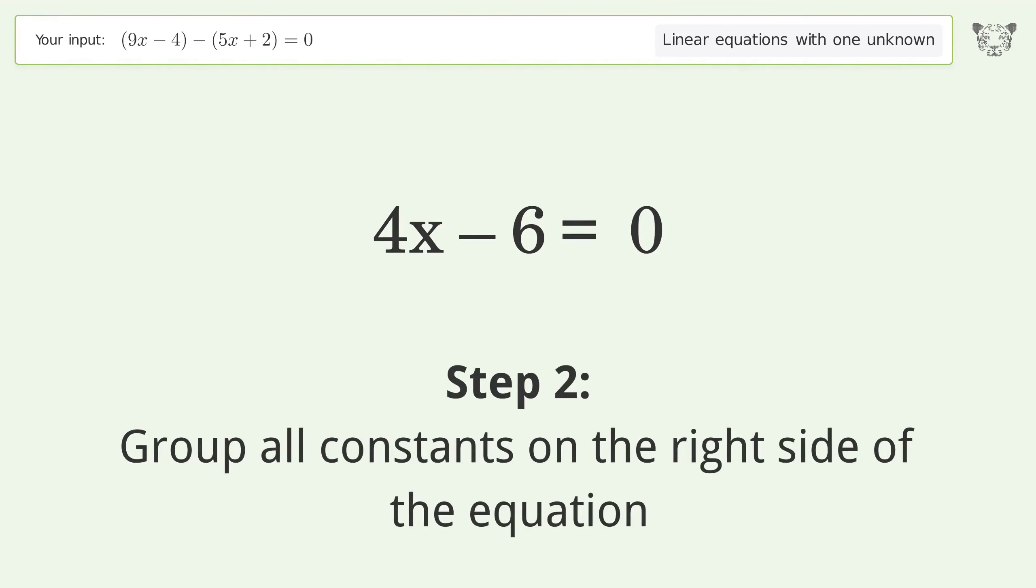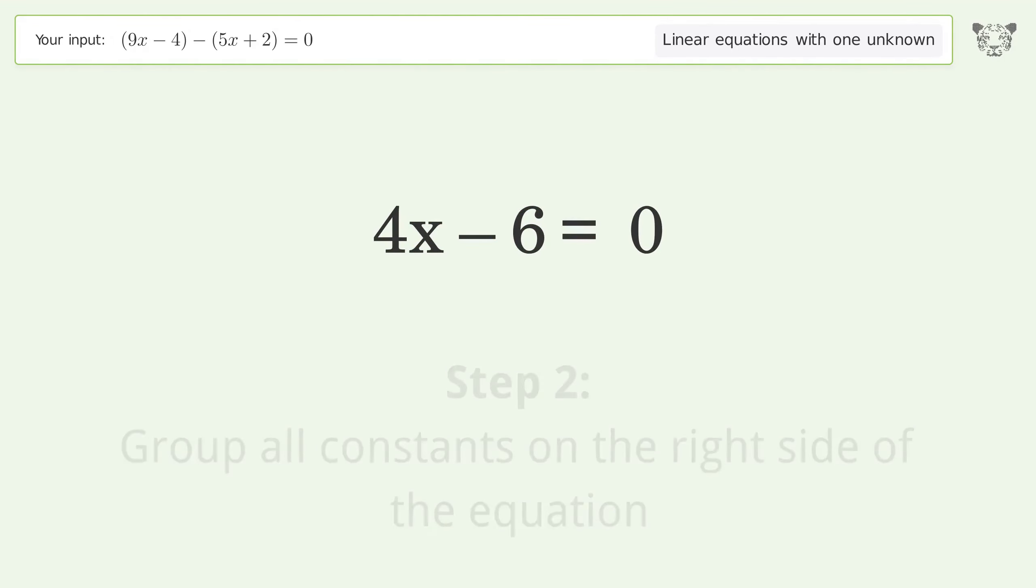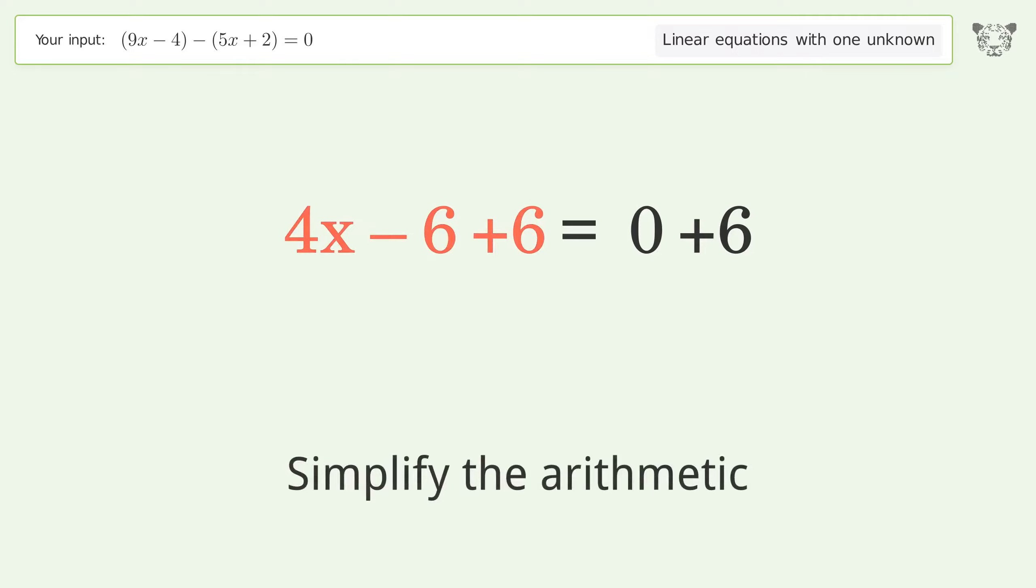Group all constants on the right side of the equation. Add 6 to both sides. Simplify the arithmetic.